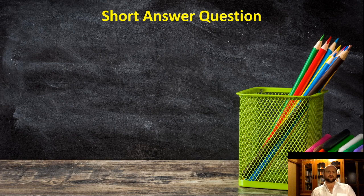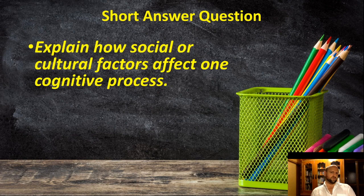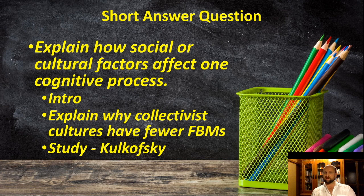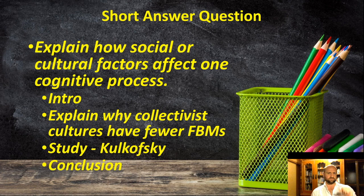How would you answer this in a short answer question? For paper one, part B, you'd have your introduction, then a paragraph explaining why collectivist cultures have fewer flashbulb memories — maybe five to eight sentences — then your study of Koukowsky as evidence to support your explanation, and then the conclusion.